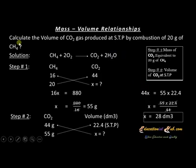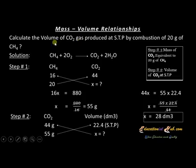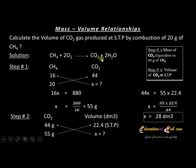In these types of numericals, you have to find the volume of any one of the reactants or products, and the mass of one of the reactants or products is given. The numerical is: calculate the volume of carbon dioxide gas produced at STP — that is, standard temperature and pressure — by the combustion of 20 grams of methane. When any substance is combusting, it is reacting with oxygen and the products are always carbon dioxide and water. So here, methane is combusting, the products are carbon dioxide and water, the mass of methane (20 g) is given, and you have to find the volume of carbon dioxide.